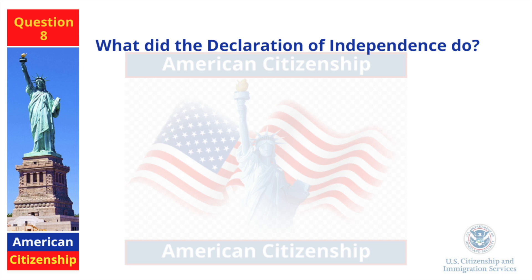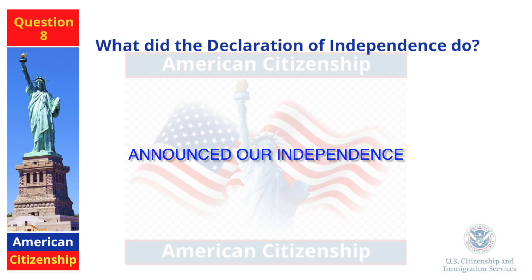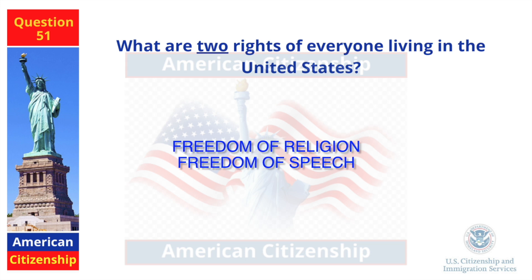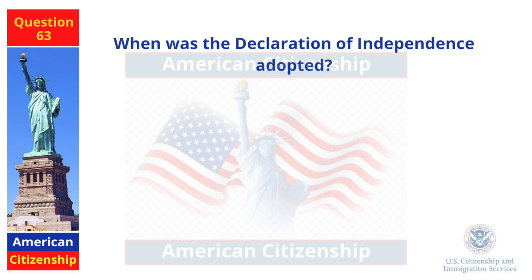What did the Declaration of Independence do? Announced our independence. What are two rights of everyone living in the United States? Freedom of religion and freedom of speech. When was the Declaration of Independence adopted? July 4, 1776.